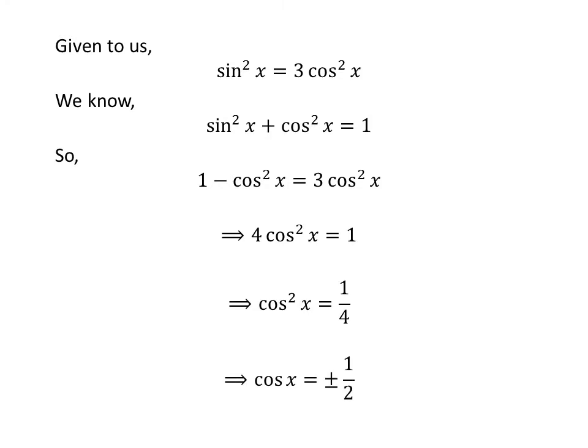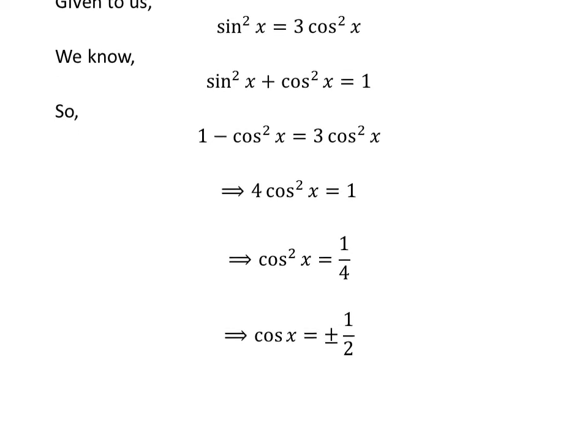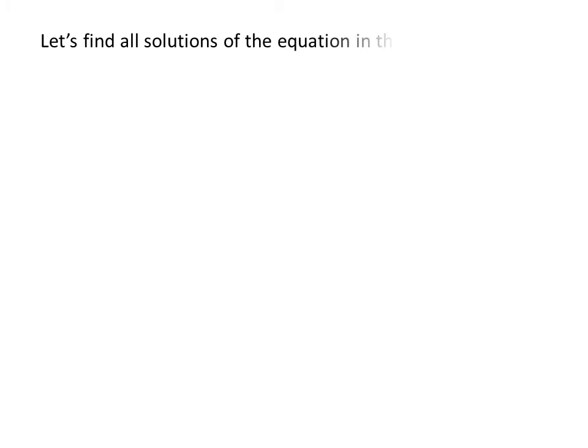Taking the square root of both sides gives us cosine of x is equal to plus or minus one half. Let us first find the solutions to the equation cosine of x equals one half in the interval 0 to 2π.